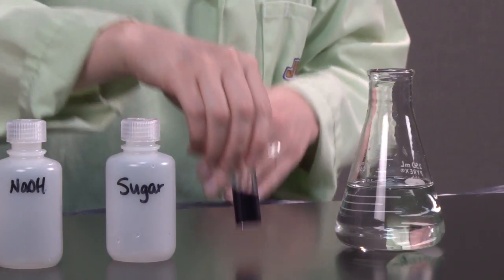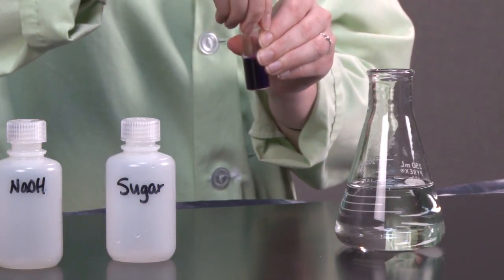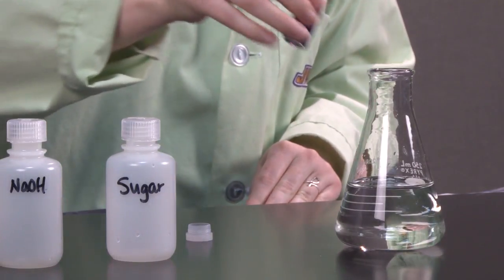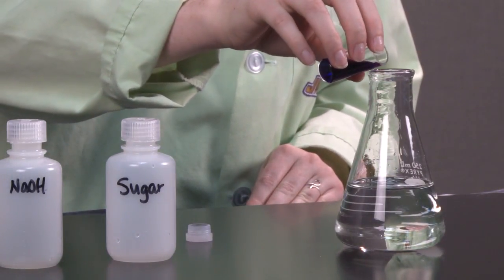And in this vial, I have a solution of potassium permanganate. You can see that it is the characteristic purple color of the permanganate ion. I'm going to go ahead and add that to the flask as well.